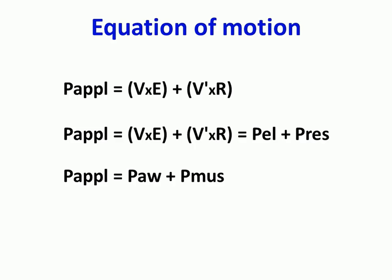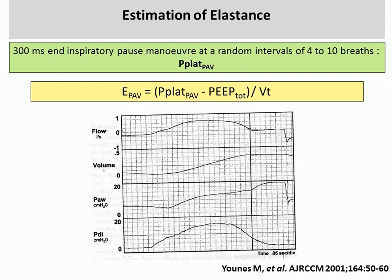PAV is based on this equation: we need the elastic pressure and the resistive pressure, and these can be separated into what the patient is doing and what the ventilator is doing. PAV measures volume and flow, calculates resistance and elastance, and at any instant of breathing can determine the total pressure needed — and as a ventilator, it is instructed to give only 50% of that. The patient does the rest. It's absolutely magic.